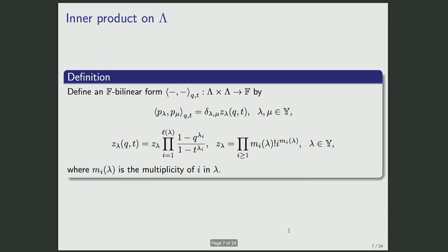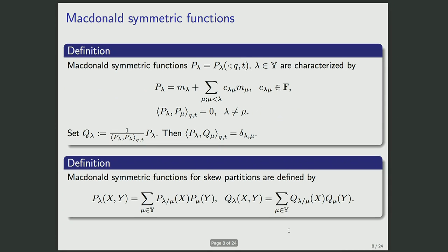I introduce an inner product on Lambda, important in the theory of Macdonald symmetric functions. Since power sums form a basis, it is convenient to define this inner product in terms of this basis. The inner product of P_lambda and P_mu vanishes unless lambda and mu are identical. If they are identical, the value is defined by a product formula involving the multiplicity m_i(lambda) of the number i in the partition lambda.